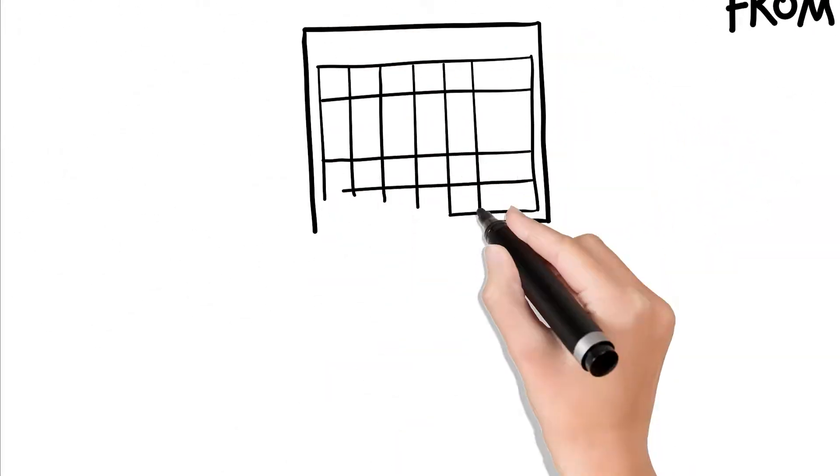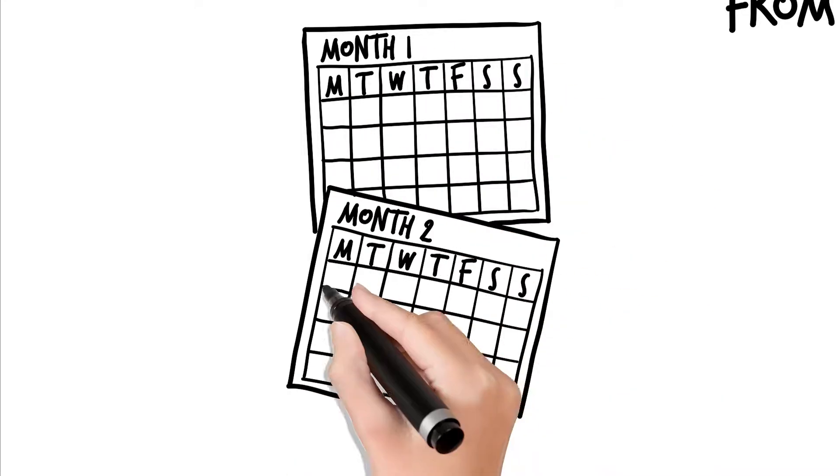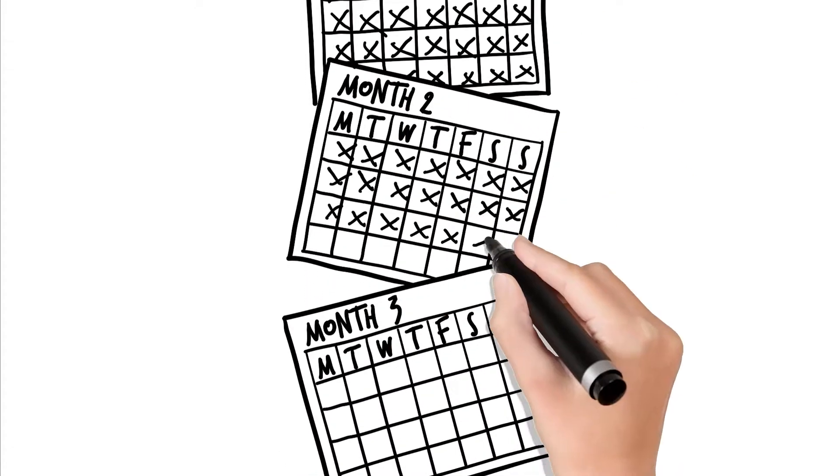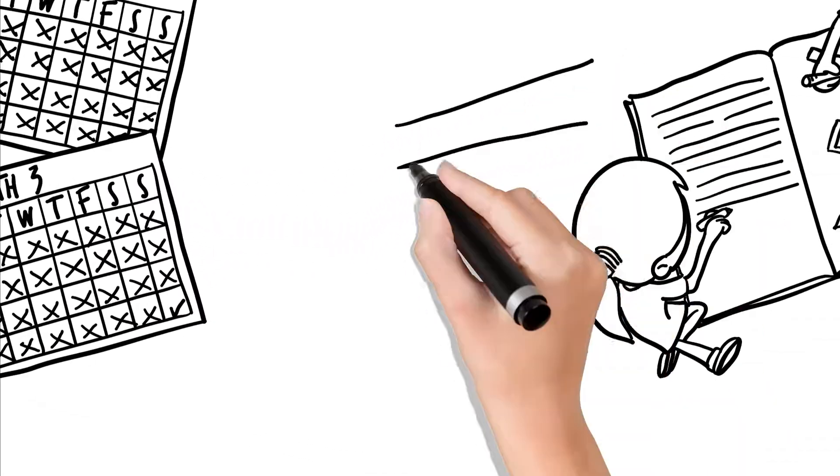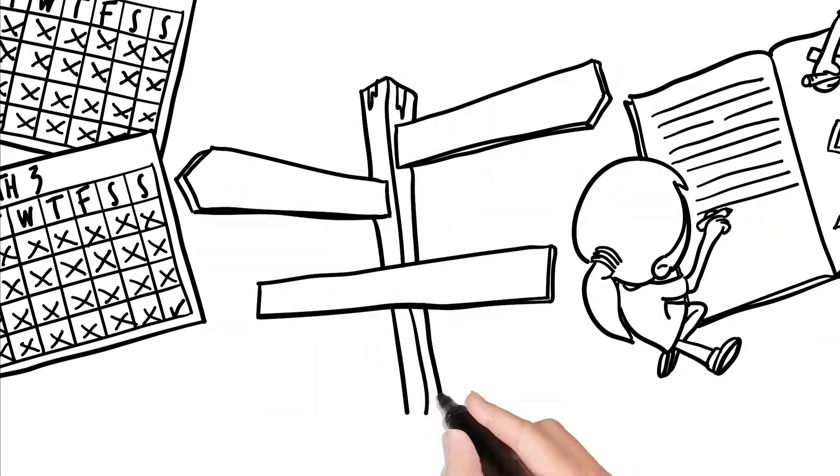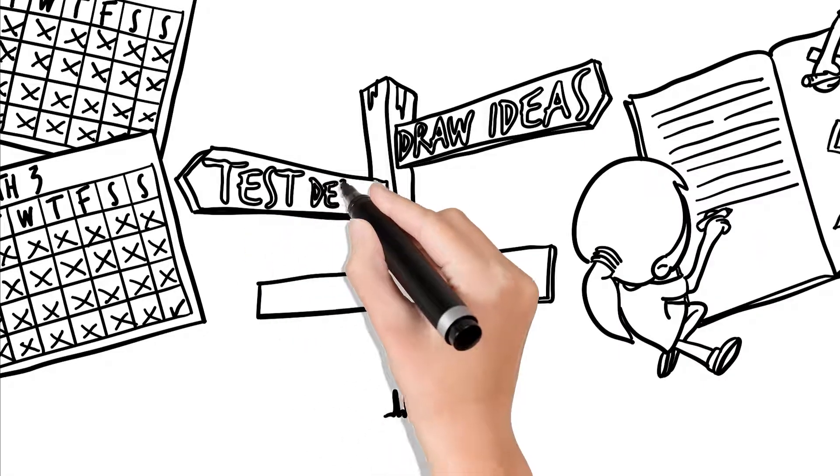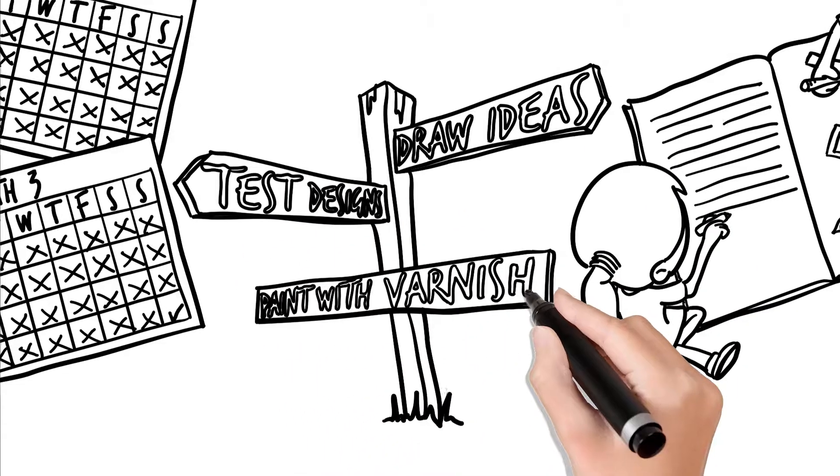You'll have 12 weeks to complete the program and submit photos of your finished cow together with your learning journal. But don't worry, you'll have access to the assessment matrix to make sure you can organize your time and stay on track.